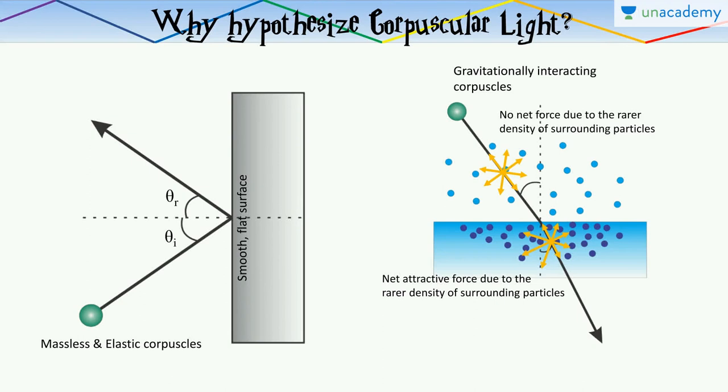Now why hypothesize a corpuscular model for light? Why does it seem to behave as a particle and not a wave?